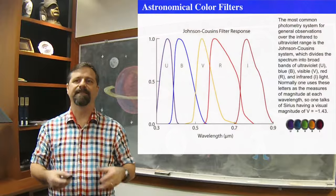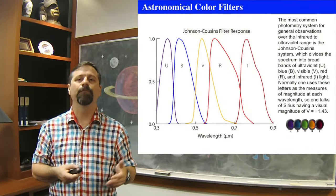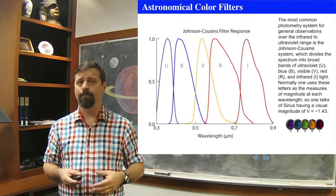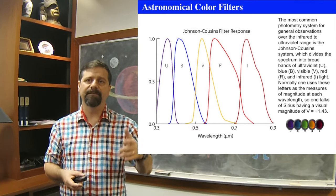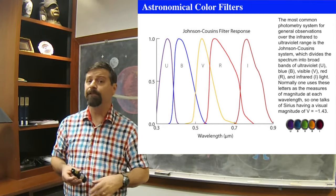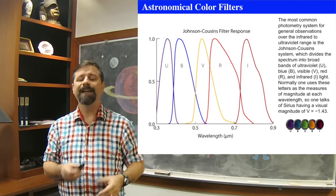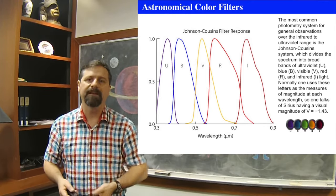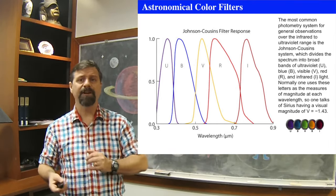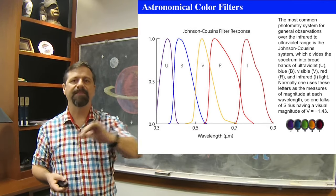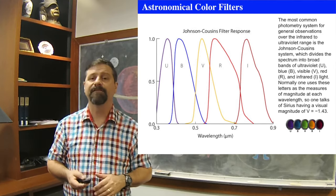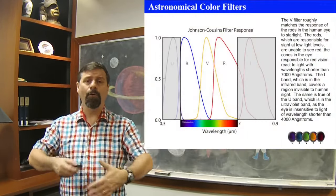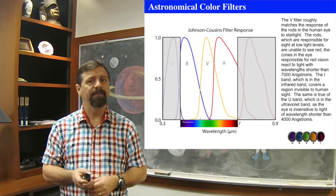The Johnson-Cousins filter response system has a very specific wavelength transmission dependency. We don't expect light bluer than about 3,000 angstroms to pass through the B filter, and we don't expect much light longer than 5,000 angstroms to pass through it either — that's what we mean by transmission curves. The sun has a certain brightness in each filter. The visible light bands are covered by the B, V, and R sections. The U and I sections require high altitude because the Earth's atmosphere strongly absorbs ultraviolet and infrared light.